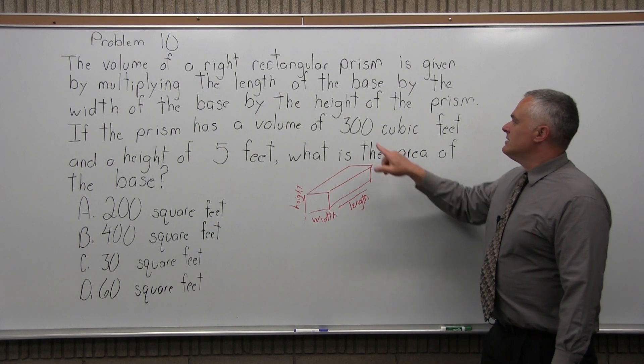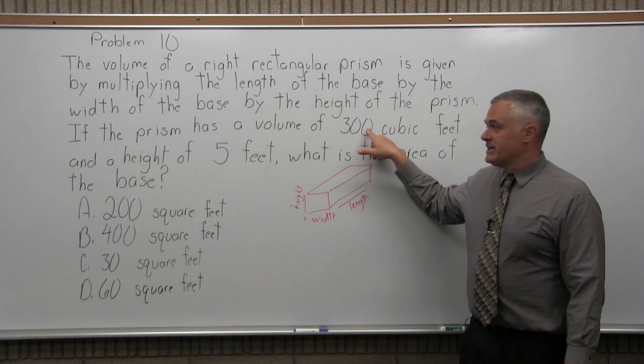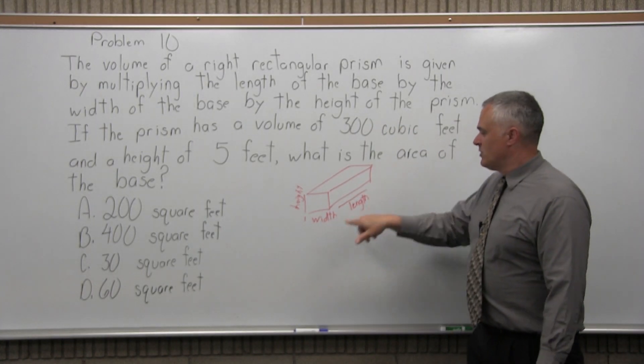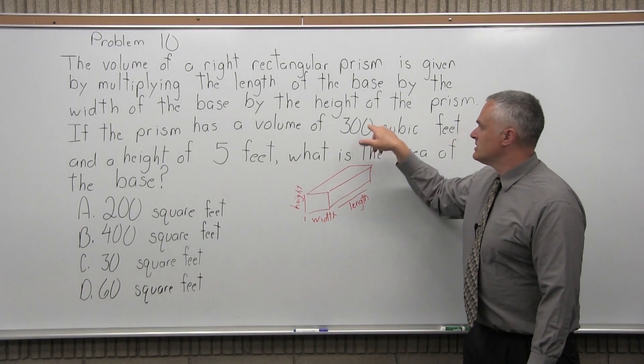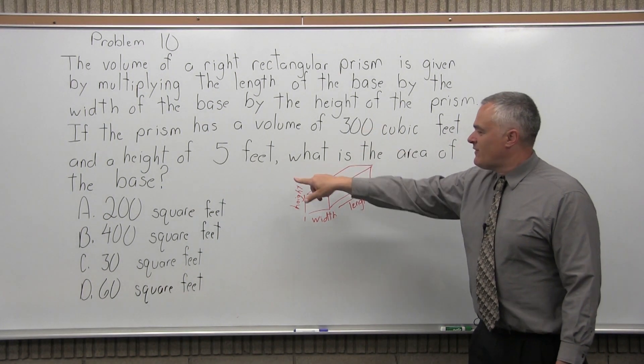So what they're saying is the answer when you multiply all that stuff comes out to 300 cubic feet. If you multiply the width times the length times the height, the answer is 300. And the height is 5.